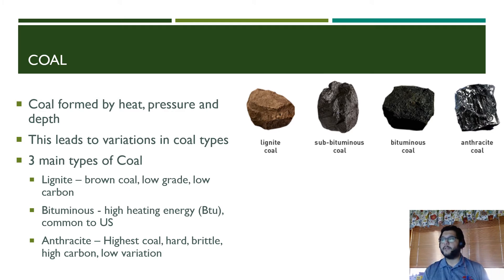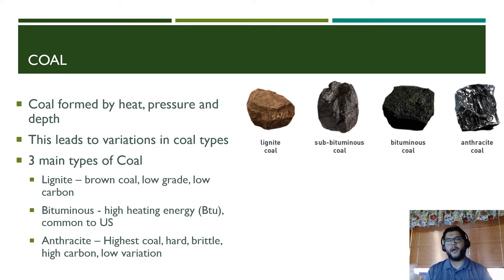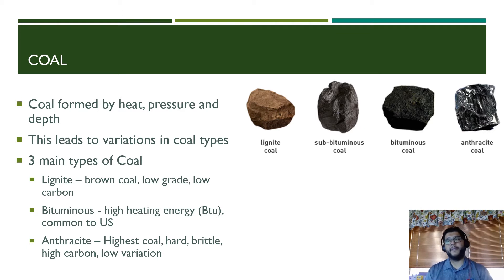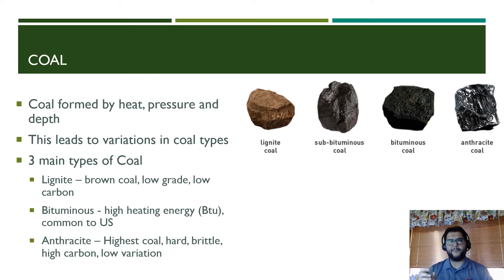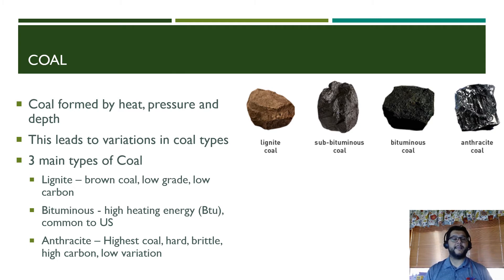After lignite, you get to subbituminous and bituminous coal, which give you high heat energy, typically measured in BTU or British thermal units. Bituminous coal is common in the United States. The best is anthracite, which is the highest grade coal — very hard, brittle, with a ton of carbon and low impurities. Coal generally has a lot of impurities, but anthracite is the most pure form and gives you a lot of heat energy.